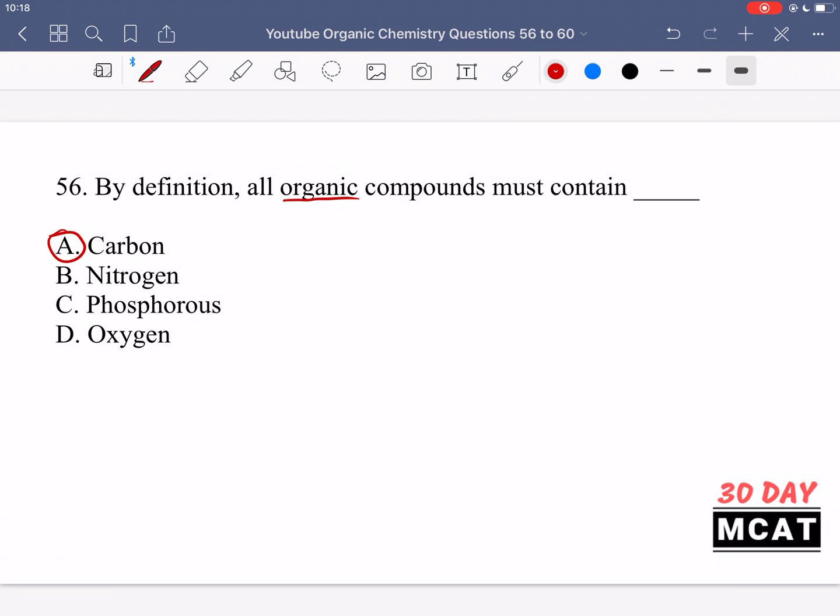So think about any organic compound you know. It always contains carbon, and then that carbon might be bonded to some hydrogens, nitrogens, oxygens, chlorides, any type of elements that you know carbon to be covalently bound to, but there always is a carbon.